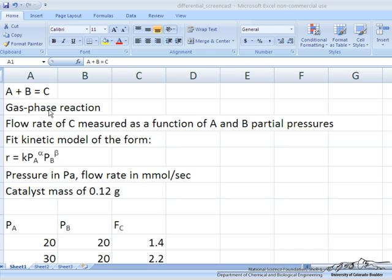This is occurring in the gas phase over a differential packed bed reactor at low conversion, and the low conversion here is essential. What we're measuring is the flow rate of C measured as a function of partial pressures of A and B.